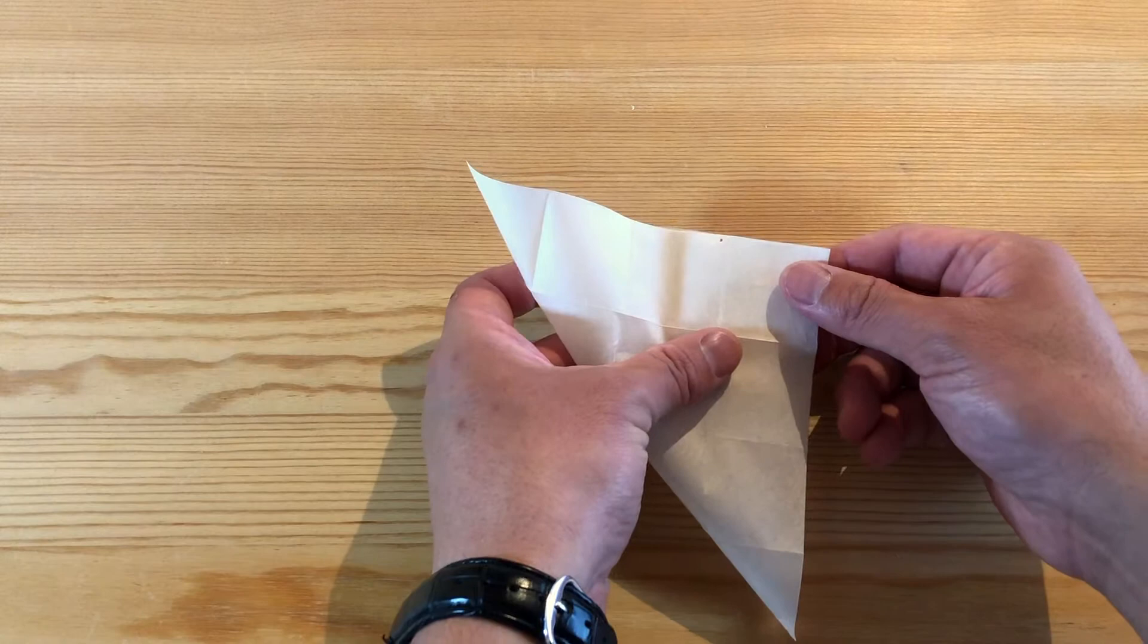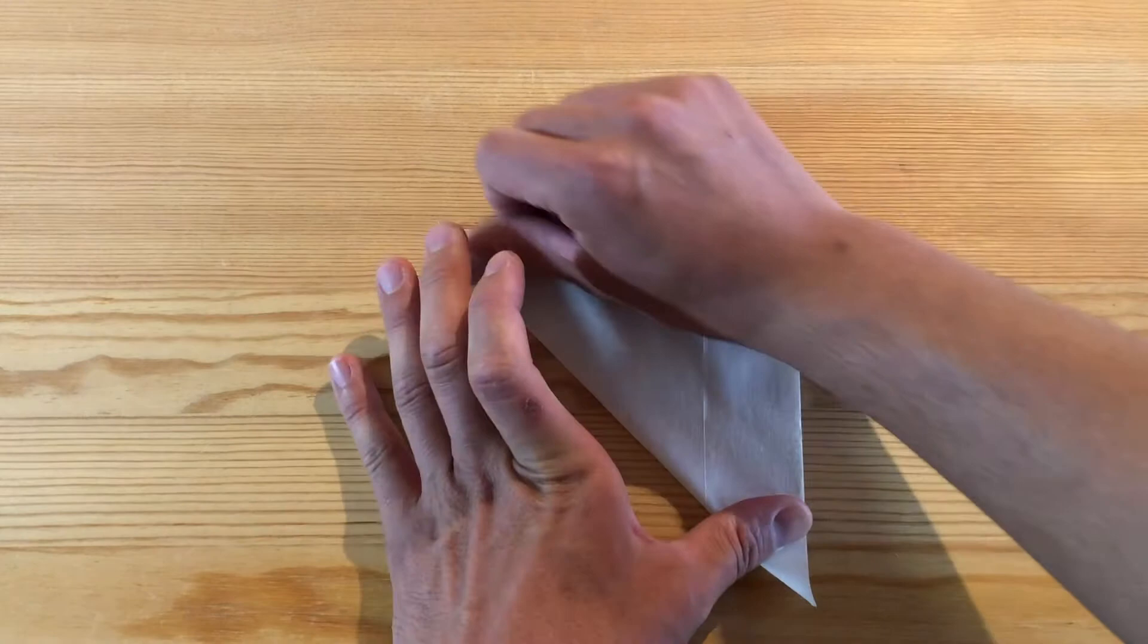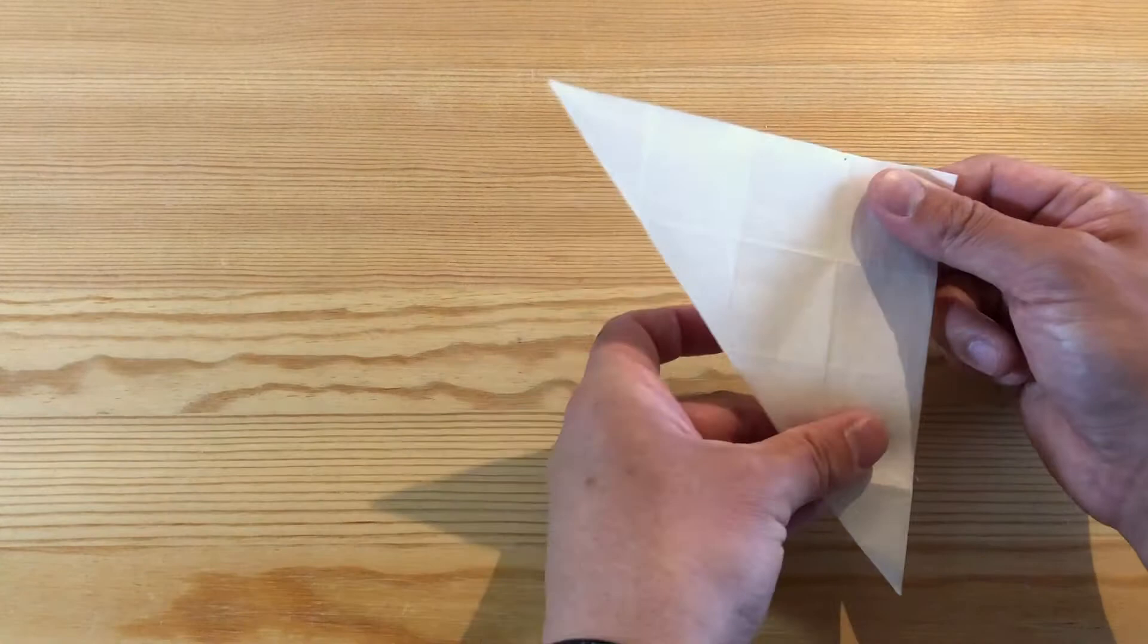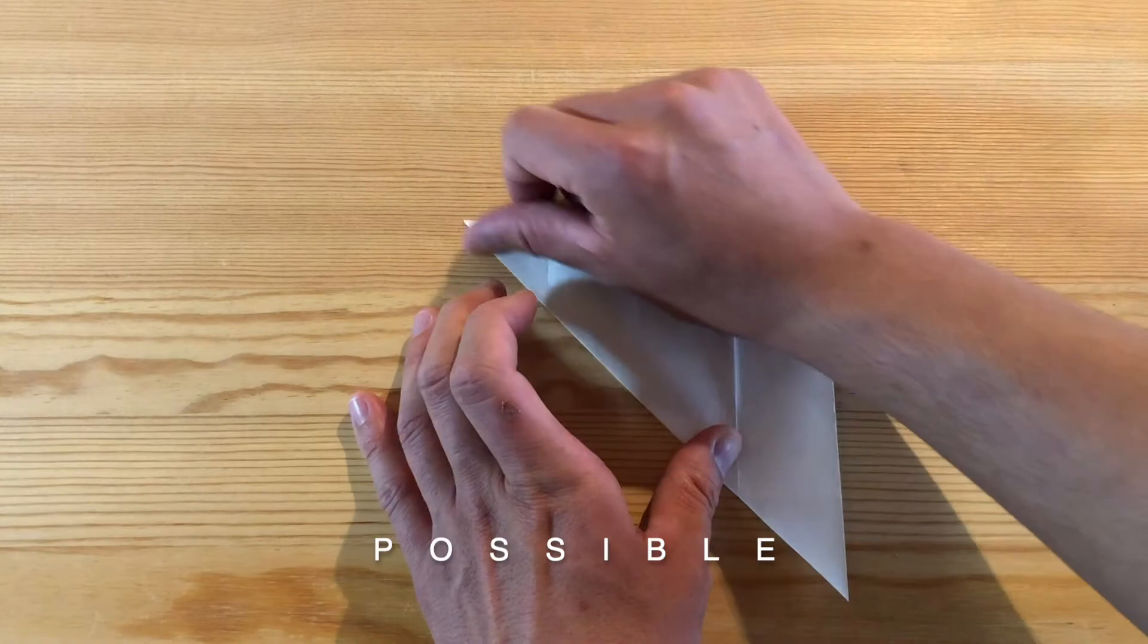Actually, we need a diagonal line. I fold like this. So this is actually critical. Minor trouble. You want to fold as precise as possible.